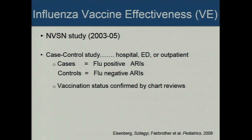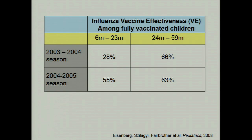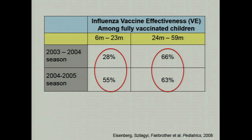The study used prospective NVSN surveillance. Cases were flu-positive children hospitalized, seen in the ED, or clinic; controls were flu-negative children who looked similar. We measured vaccination status by chart review and calculated influenza vaccine effectiveness — not efficacy but real-world effectiveness. Here's what we found: good news and not the best news. Vaccine effectiveness among fully vaccinated kids varied by year. One year it was pretty low for 6- to 23-month-olds; the next year slightly higher. For older kids it was a little better.